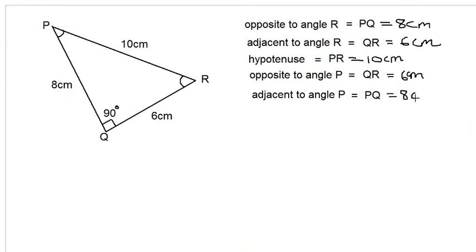This understanding of opposite, adjacent, and hypotenuse is vital in working out the trigonometric ratios of sine, cosine and tangent. Thanks for watching.